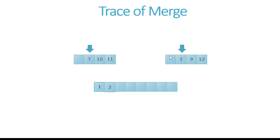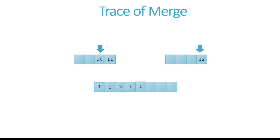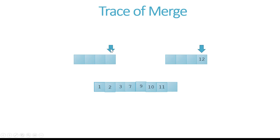Now we are at location one in both arrays. Seven compared to three places three in the output and moves the reference for the second array. Seven is less than nine, so we move seven and advance the index for the first array. Nine is less than ten, so we take nine and move the index of the second array. Then ten is less than twelve, so we take it and move the index of the first array. Then eleven compared to twelve — eleven is less — so we move eleven to the destination and we are done with this array.